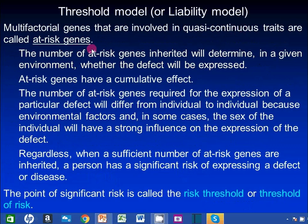To address this issue we switch to the threshold model. A central idea of the threshold model, or liability model, is at-risk genes. The number of at-risk genes inherited will determine whether the defect will be expressed or not — at-risk genes have a cumulative effect. The number of at-risk genes required for expression of a particular defect will differ from individual to individual because of environmental factors. In some cases the sex of the individual will have a strong influence on expression of the defect. Regardless, when a sufficient number of at-risk genes are inherited, a person has a significant risk of expressing the defect or disease. The point of significant risk is called the risk threshold.